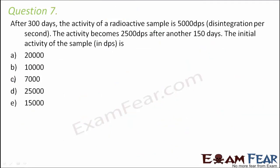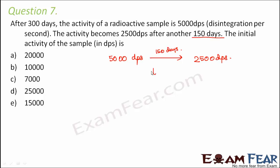Question number 7. After 300 days, the activity of a radioactive sample is 5000 DPS (disintegrations per second). The activity becomes 2500 DPS after another 150 days. From this information, we can see that in 150 days the activity halved from 5000 to 2500 DPS, so the half-life is 150 days.